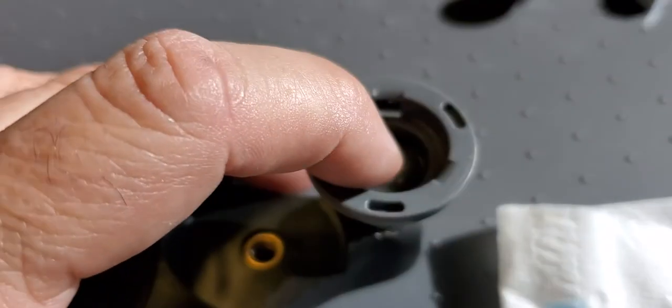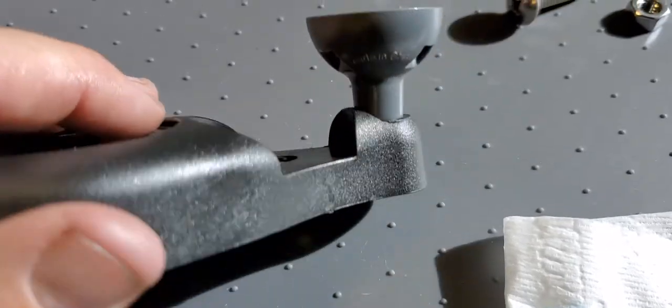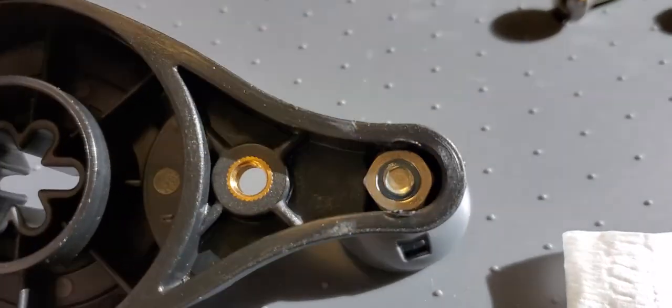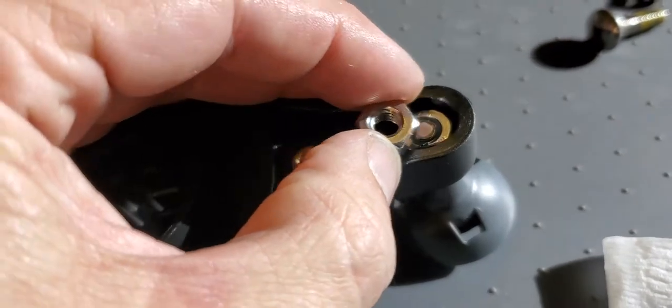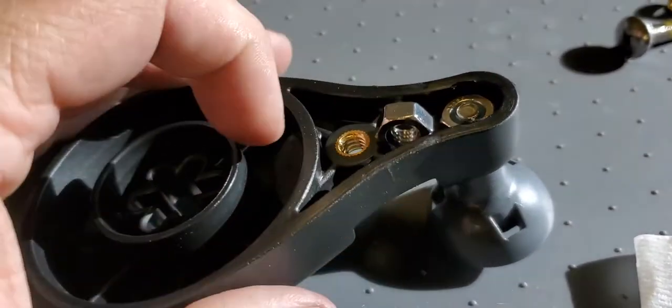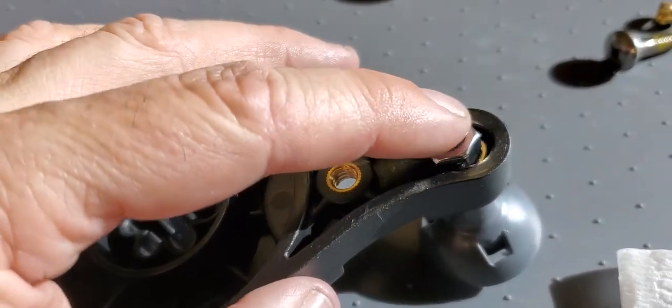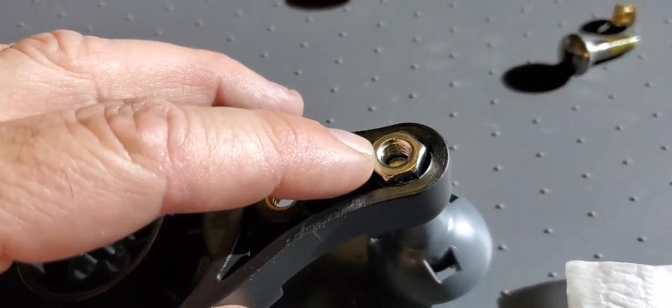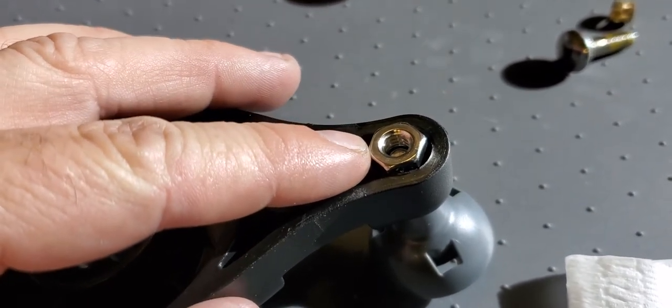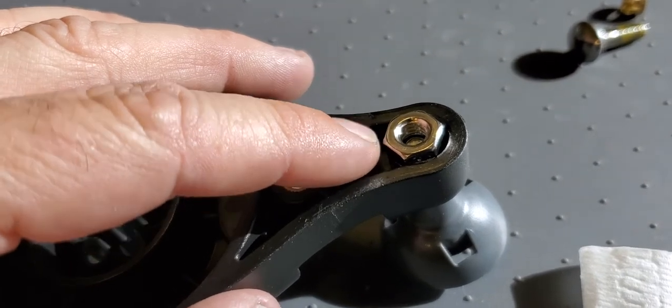Use the quarter-twenty down through the center of that. And the quarter-twenty nut fits right down inside of there. I've already got that one in there, but you can see the bolt will just pull it right down into the plastic. It's a real snug fit and it'll hold itself.